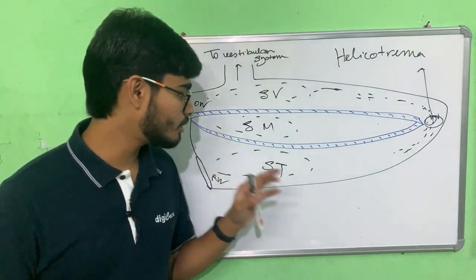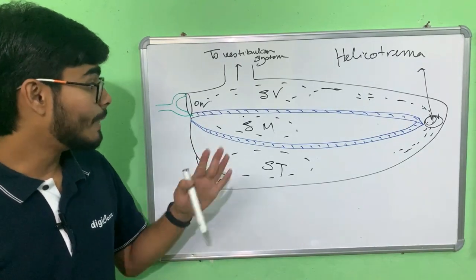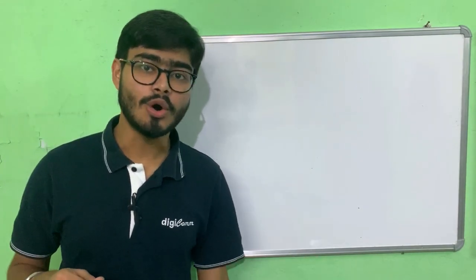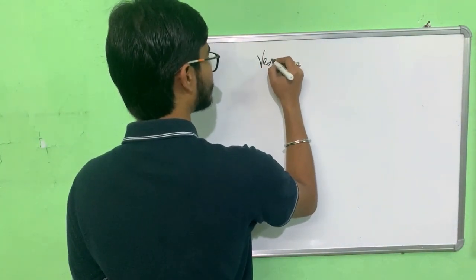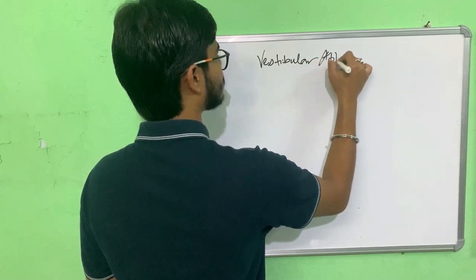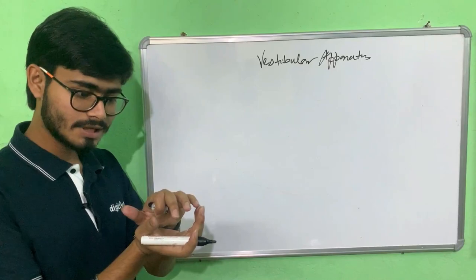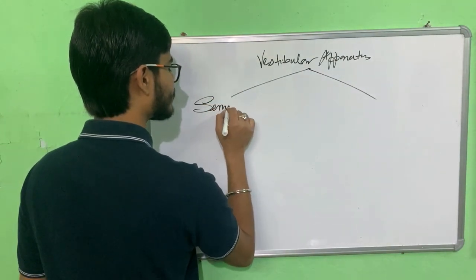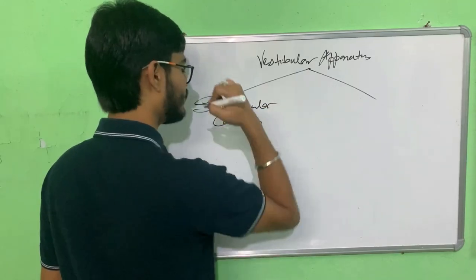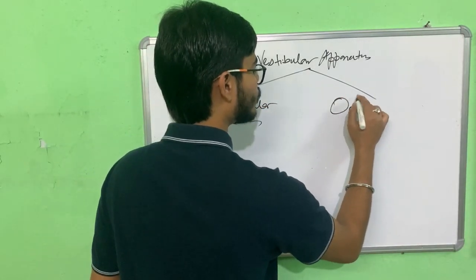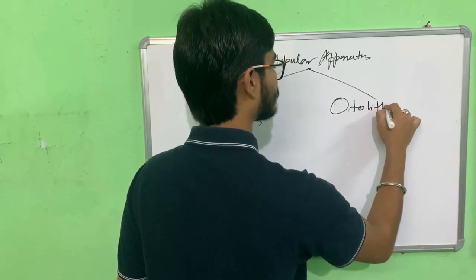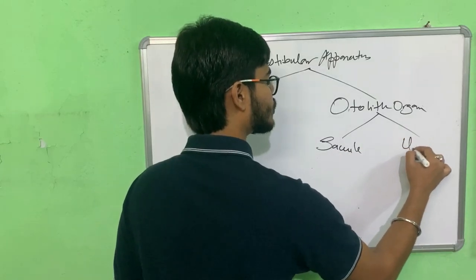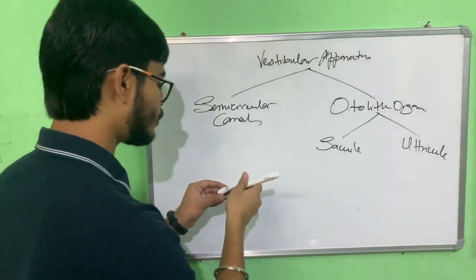That covers the generation of auditory impulse — the hearing part. Now for the body balance part: just as hearing is concerned with the cochlea, body balance is concerned with the vestibular apparatus. The vestibular apparatus lies connected to the cochlea just above it, and consists of semicircular canals and the otolith organ. The otolith organ consists of the saccule and utricle.